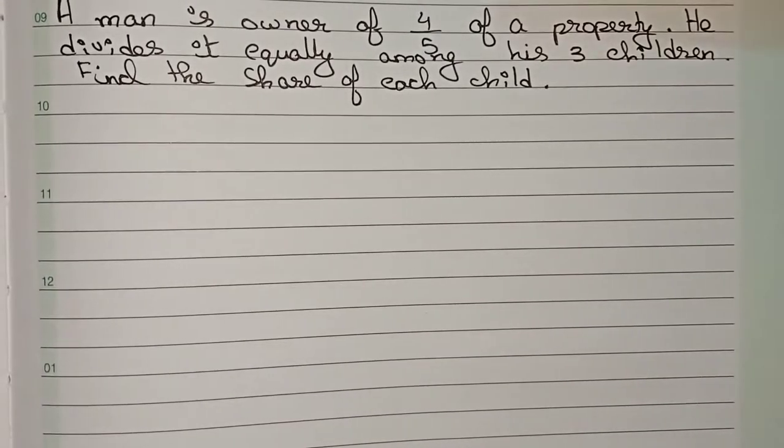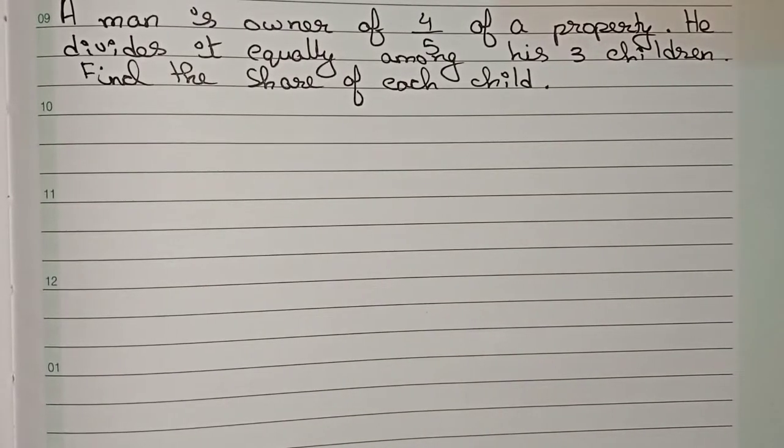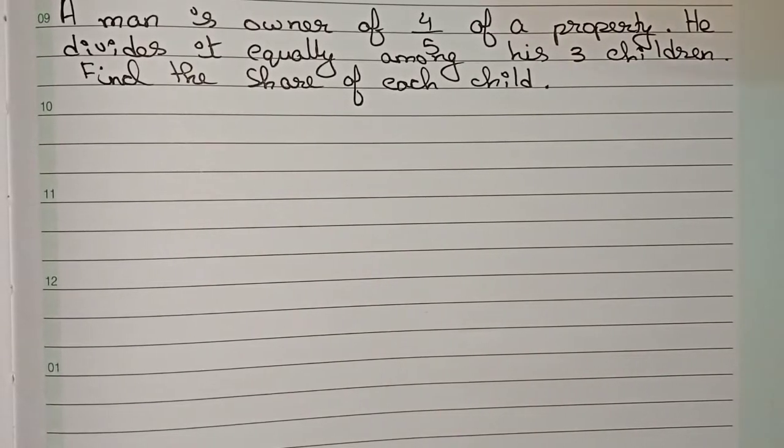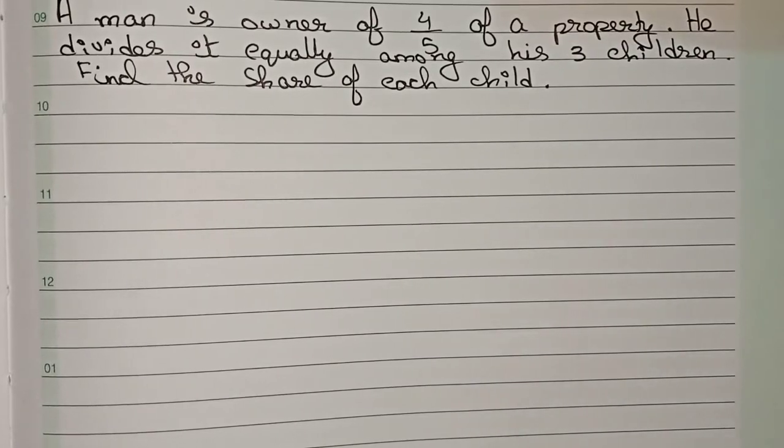Hello guys, welcome to this video. In this video, our question is: A man is owner of 4/5 of a property. He divides it equally among his three children. Find the share of each child.